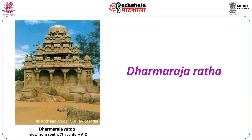Looking at the Dharmaraja Ratha, the tallest Vimana of the Pancharathas, it is a Tritala Vimana with three storeys. Above the pillar there is a beam, and above that a Kapotha with Kudu motif — an introduction from Mahendra Varman's times. On each Thala, you can see a series of shrines: Karna Kutas at the corners, Salas in between, and Pancharas. This series of miniature shrine elements is called Hara.